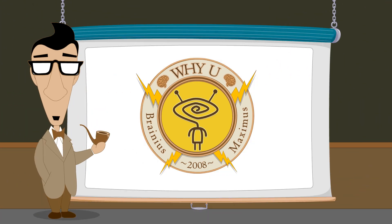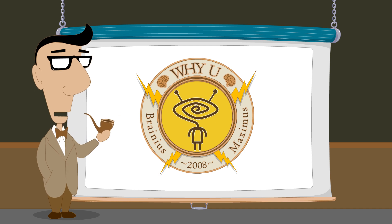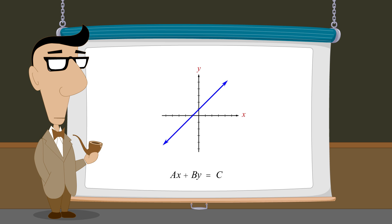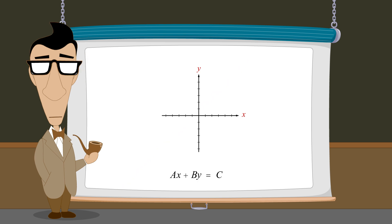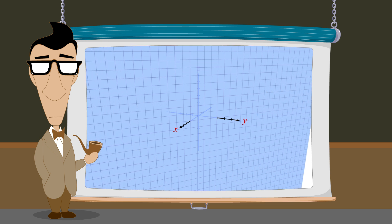Hello, I'm Professor Von Schmohawk and welcome to Why U. In the last lecture, we saw that just as the graph of a linear equation in two variables creates a line which extends infinitely in both directions, the graph of a linear equation in three variables creates a plane which extends infinitely in all directions.